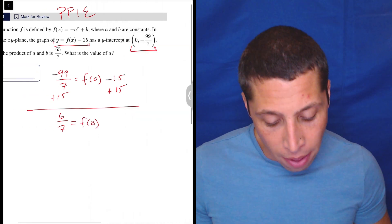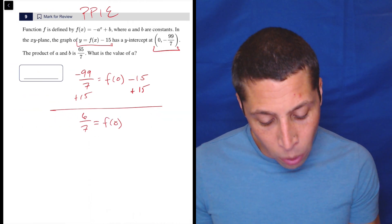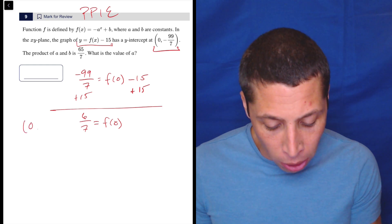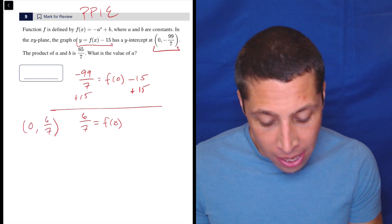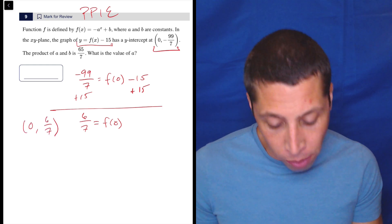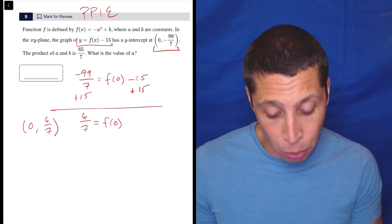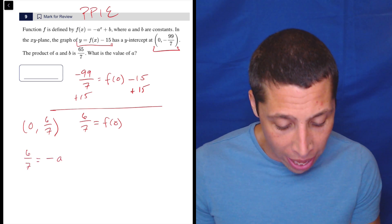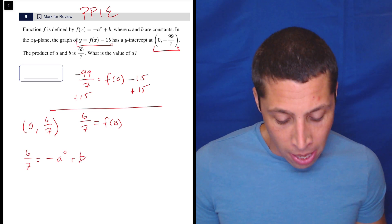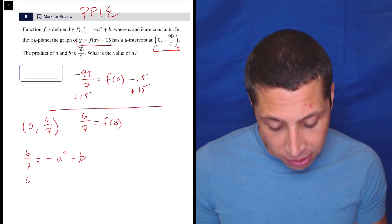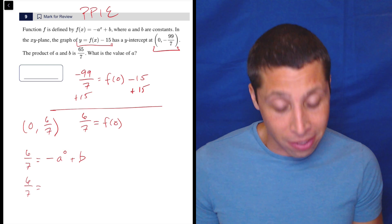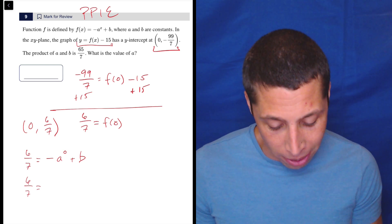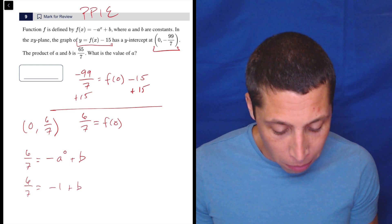So just to be clear what that's giving us, that is giving us a point where (0, 6/7) is going to fit into the regular old F equation. So I can even put that in now. That means 6/7 is equal to negative A to the zero plus B. And so here, 6/7 is equal to what's A to the zero? Well, anything to the zero is one.